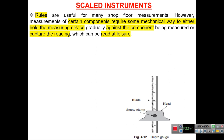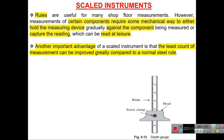An important advantage of scaled instruments is that the least count of measurement can be greatly improved compared to a normal steel rule. A steel rule may have only one millimeter as the smallest division, but modern instruments can have least counts much smaller than one millimeter.